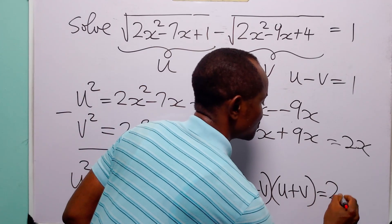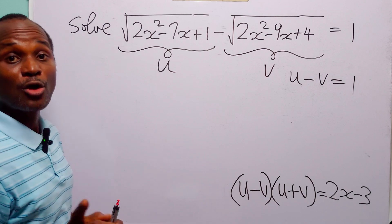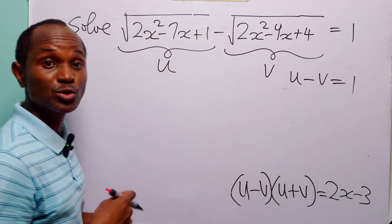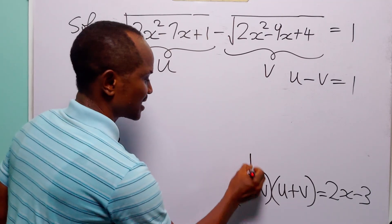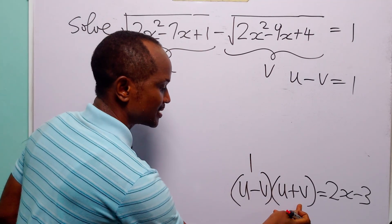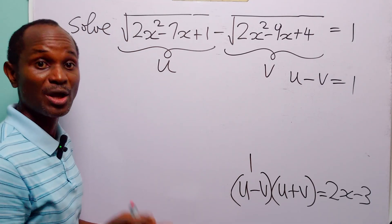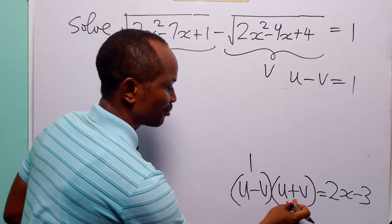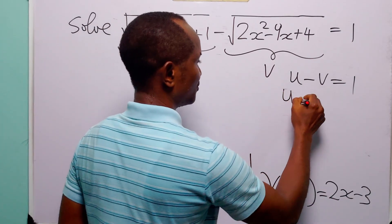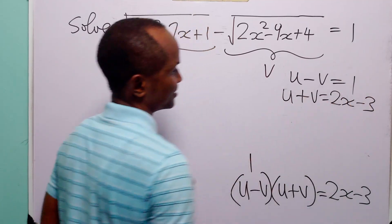But now remember that from the original equation, we have that u minus v is equal to 1. So that means that this is equal to 1. And of course, you know that when a quantity is multiplied by 1, it remains the same. So simply, we have that u plus v is equal to 2x minus 3.